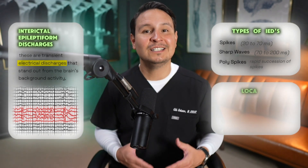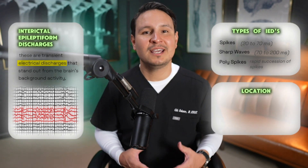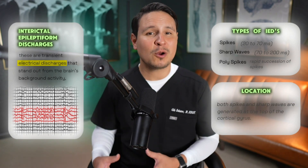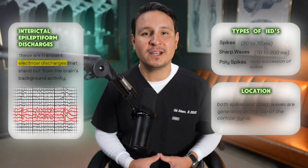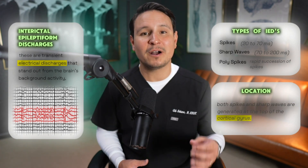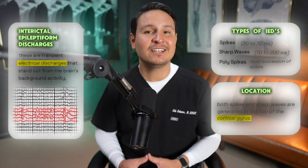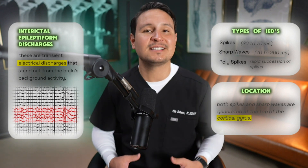And finally, location and polarity: both spikes and sharp waves are generated at the top of the cortical gyrus, usually showing a negative polarity on the scalp EEG.